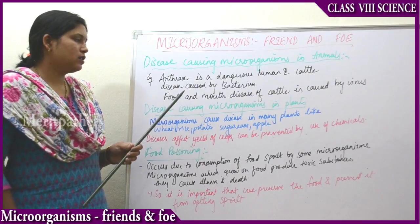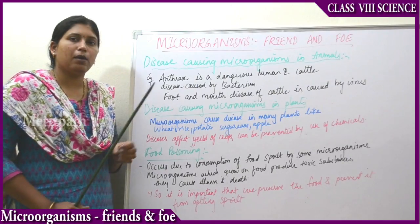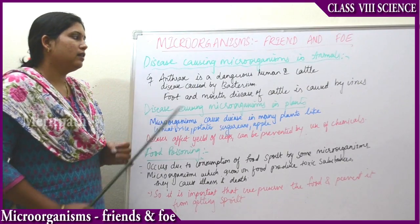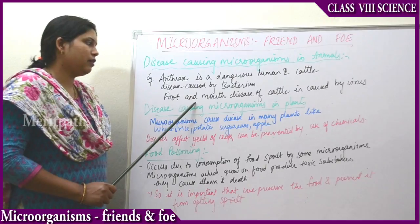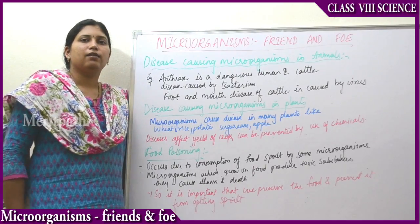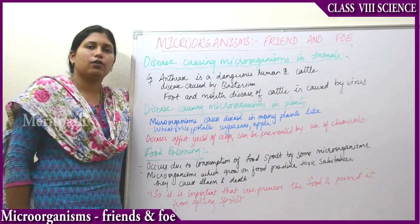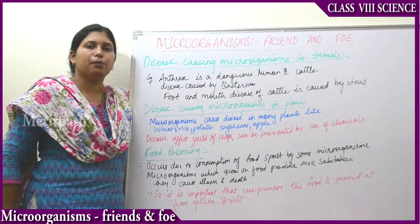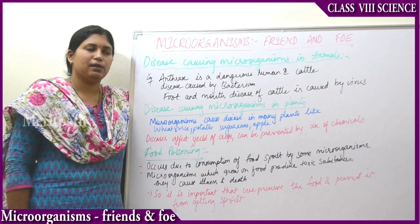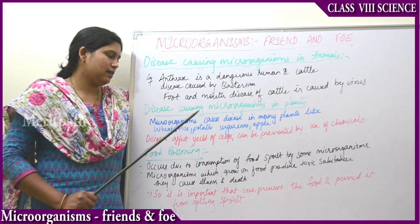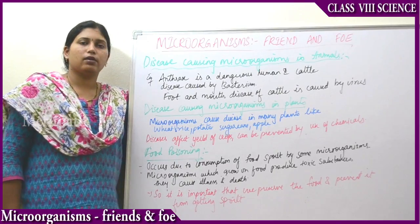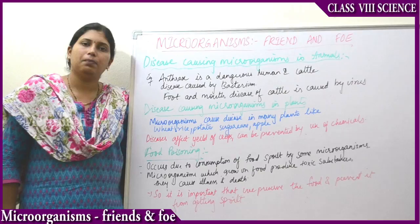Then one more disease is foot and mouth disease of the cattle, and this is caused by a virus. So this is the way in which harmful microorganisms affect the animals. Next, let's see disease-causing microorganisms in plants.